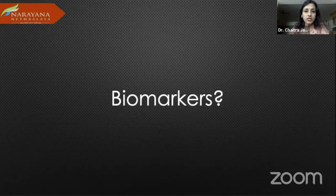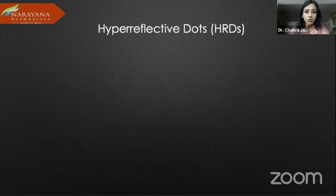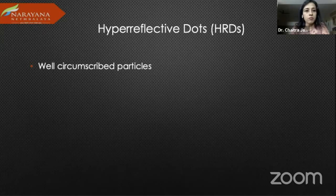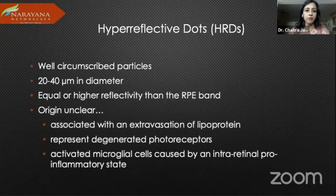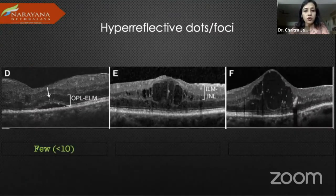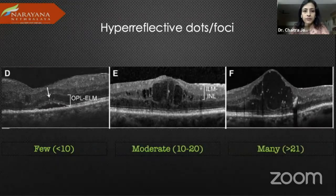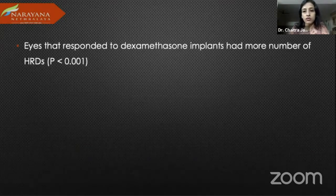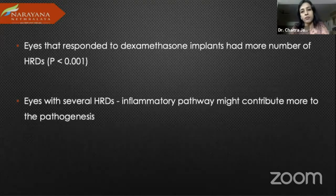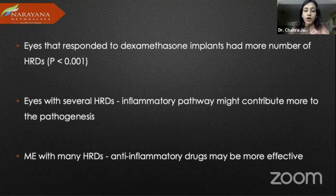There were some questions on biomarkers, so I'll do a quick run-through of DME imaging biomarkers on OCT. Hyperreflective dots are well-defined particles, 20 to 40 microns in diameter, with equal or higher reflectivity to the RPE band. Their origin is still unclear, but they do help clinically. Eyes that responded to ozurdex or dexamethasone had more HRDs, suggesting that when there are several HRDs the inflammatory pathway may contribute more to the pathogenesis, and therefore anti-inflammatory drugs may be more effective.